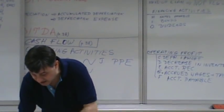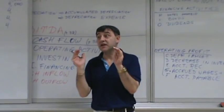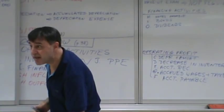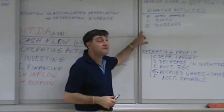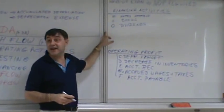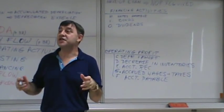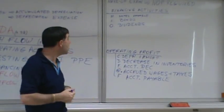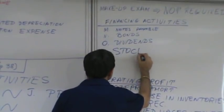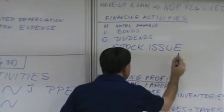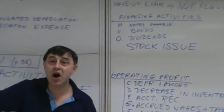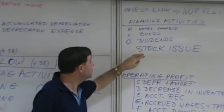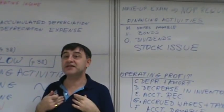There is one more item not in the textbook but the original classic financing activity: issuing stock. When you issue new stock, investors give you cash — that's a cash inflow and increases cash. That is the classic financing operation.